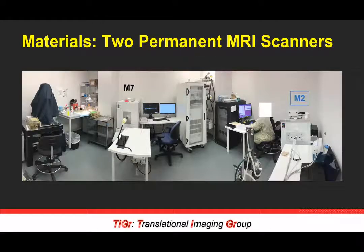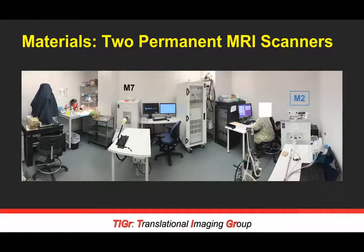The GRE sequence uses 0.5 millimeter cubed isotropic resolution and is a 15-minute scan as we cycle through five different flip angles for calculating T1 values using a variable flip angle method. In our lab we have two of these 1 Tesla permanent magnet scanners and use them pretty frequently, imaging anywhere from 10 to 30 animals a day for a variety of different research applications.